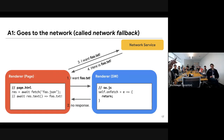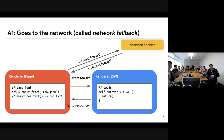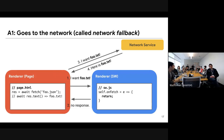The renderer for the page asks the renderer for the service worker for the resource, but since there's no respondWith, it returns a message like 'no response'. The renderer then asks the network service for the resource foo.txt, and the network service responds. At the end, the renderer gets the content of foo.txt instead of the string 'bar'.